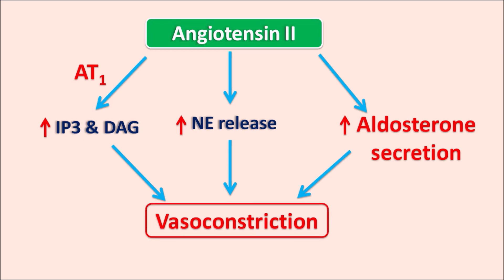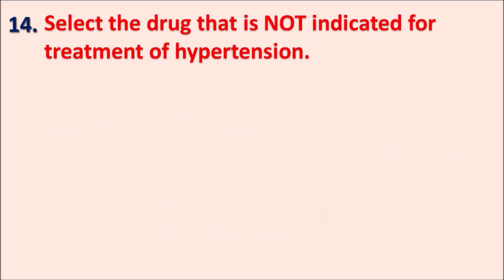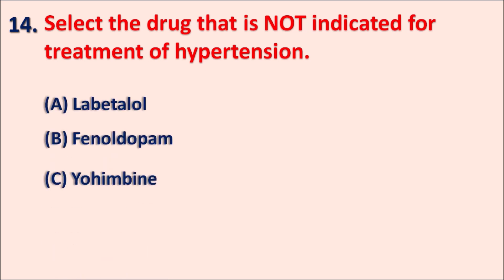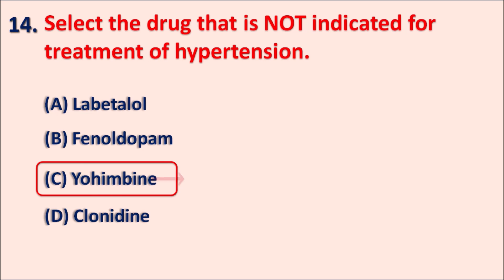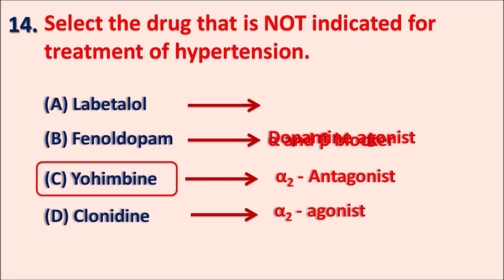Apart from vasoconstriction, angiotensin II can also produce hypertrophy and hyperplasia, so smooth muscles can be proliferated by prolonged angiotensin II action. Question fourteen: Select the drug that is not indicated for the treatment of hypertension. The right answer is yohimbine. Yohimbine is an alpha-2 antagonist, and these alpha-2 antagonists are not used to decrease hypertension. Instead, clonidine, which is an alpha-2 agonist, is used to treat hypertension. Phenoldopam is a dopamine agonist producing renal vasodilatation, and labetalol is an alpha and beta blocker used in hypertension during pregnancy.